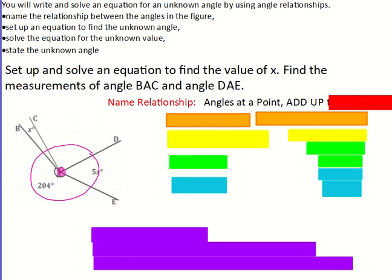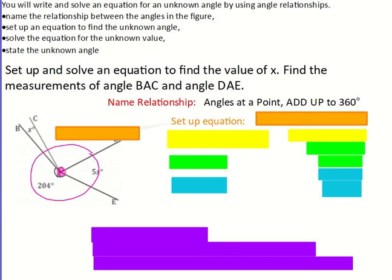Angles at a point add up to 360 degrees. Think of a circle, there's 360 degrees in a circle. So what you need to do is add those four angles together and set them equal to 360. So let's do that. Let's set up our equation.